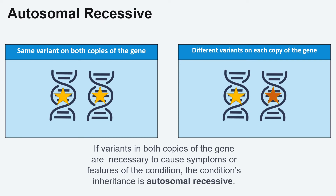Autosomal recessive describes conditions or syndromes caused by changes to genes on the first 22 pairs of chromosomes. Conditions or syndromes that are caused by having a pathogenic or likely pathogenic variant in both copies of the gene are called autosomal recessive. This means neither copy of the genes are working properly. People with autosomal recessive conditions might have the same variant on both copies, or two different variants, one on each copy of the gene.